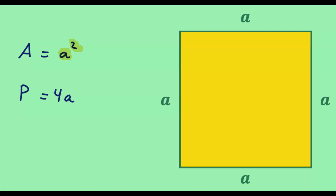And if we want to determine the perimeter of the square — that is, if we want to determine the length of the boundary of the square — then we need to multiply four by the length of the side of the square.